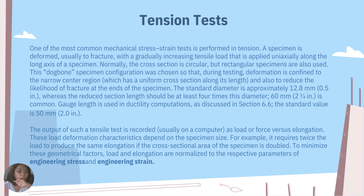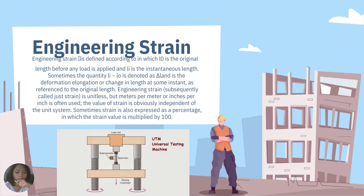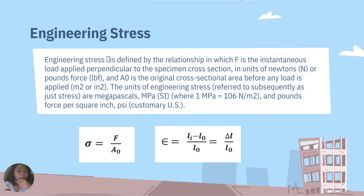Engineering stress is defined by the relationship in which F is the instantaneous load applied perpendicular to the specimen cross-section, in units of Newtons or pounds-force, and A₀ is the original cross-sectional area before any load is applied. The units of engineering stress are megapascals (MPa), where one megapascal equals 10⁶ N/m², and pounds-force per square inch (PSI).